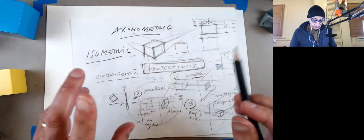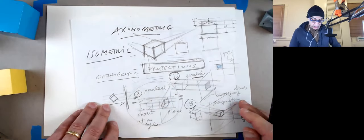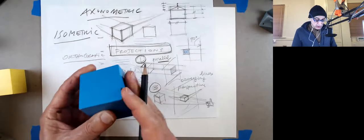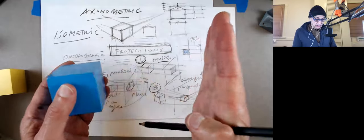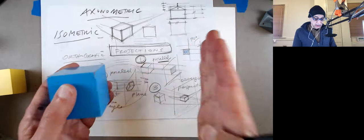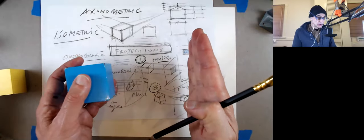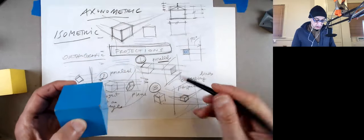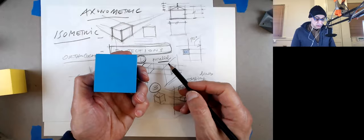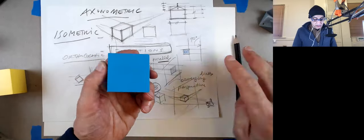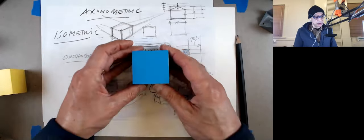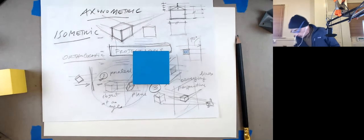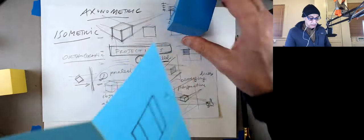There are three types of projections. First, we have parallel projections, where an object is projected onto a plane and everything is parallel — the planes on the object and the lines are orthogonal to the object. What you get when you project this way is a square, if you place the object exactly facing your drawing surface.